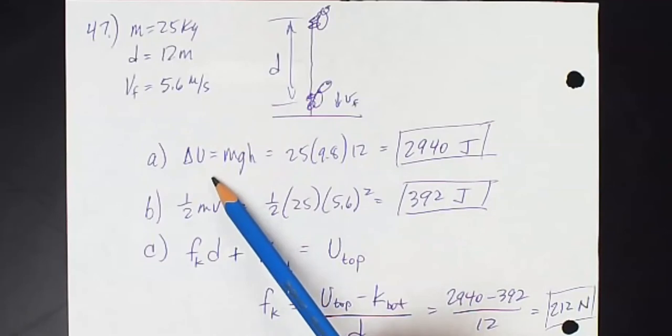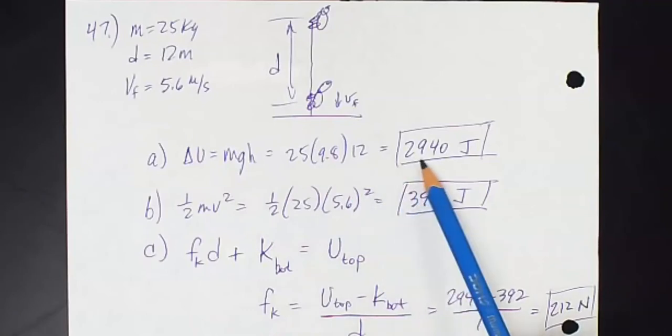So how much gravitational potential energy does the bear have at the top? That's MGH, of course. So there's my answer, 2,940 joules.